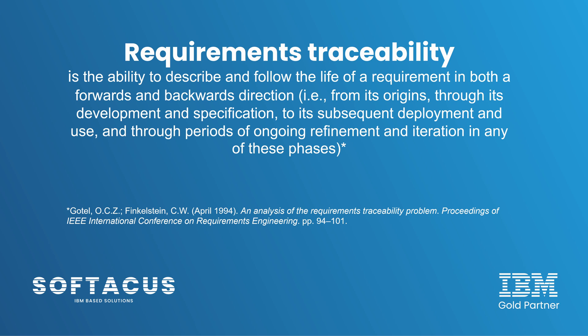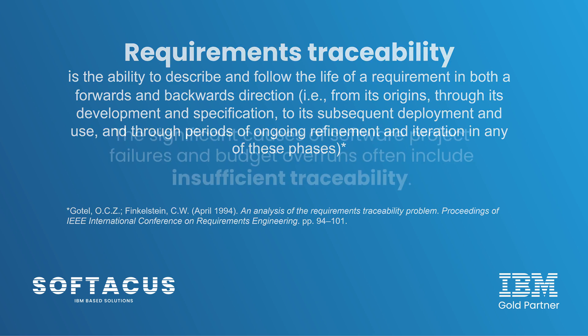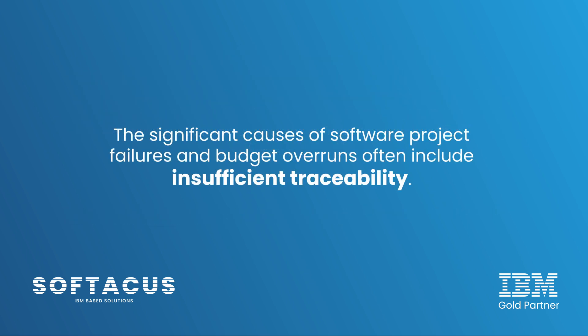If you have at least a basic understanding of requirements management, then you probably know that high-quality, well-written requirements in a single application that can act as a single access point to all engineering information, and therefore also as a single source of truth, is extremely important. But what I am trying to say in this video is that it's equally important to have visibility across the engineering life cycle and all relationships in order to successfully manage complex projects. I really cannot stress enough how important linking is. It is absolutely no secret that inadequate traceability is an important contributing factor to software project failures and budget overruns.